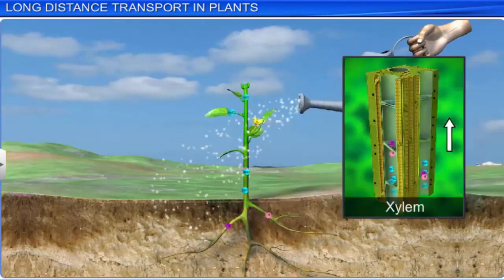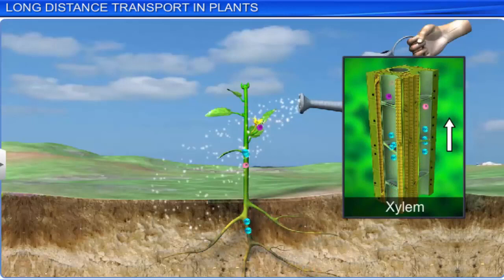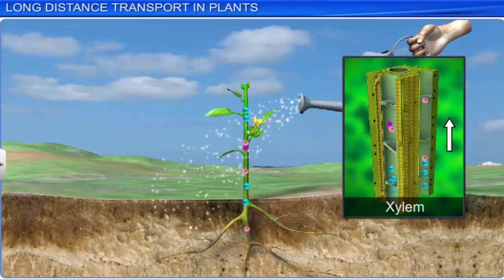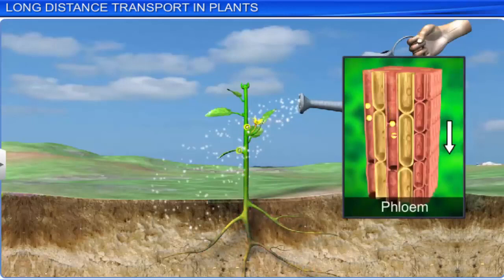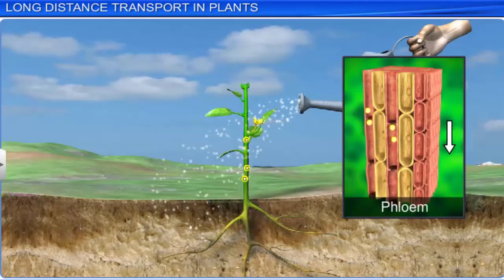Xylem transports water, minerals, and hormones upwards from the plant's roots. While phloem transfers organic or inorganic solutes from the leaves to other parts of the plant.